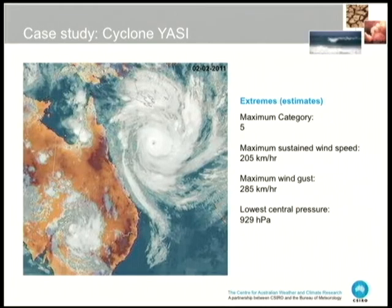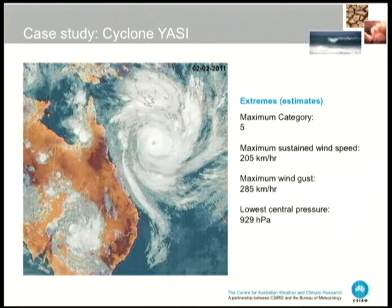To motivate the problem, I'm going to look at a case study: Cyclone Yazi. That was a tropical cyclone that hit Northern Australia around February this year, and it was a very big cyclone. The details are pretty impressive — it had a sustained wind speed of about 200 kilometres per hour and wind gusts of almost 285 to 300 kilometres per hour. So it was a real beast.